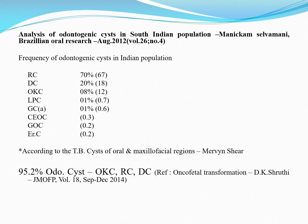Once a tooth suffers injury, trauma, or decay, it leads to death of the pulp tissue. The necrotic materials from the pulp tissue reach the periapical region and trigger an inflammatory process there. This inflammation causes the cyst. The radicular cyst comes under the category of inflammatory cyst and arises from the odontogenic epithelium — the cell rests of Malassez — which are remnants of the root sheath.